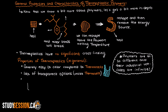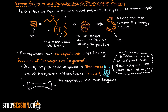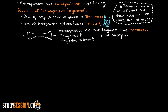In terms of toughness, thermoplastics are generally much better than thermosets. This means that they can absorb more energy and deform more plastically without breaking. This causes thermoplastics to have a lower tensile strength but a higher elongation to break than thermoset polymers.